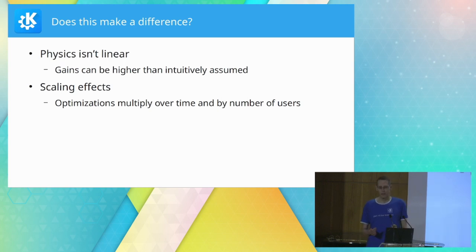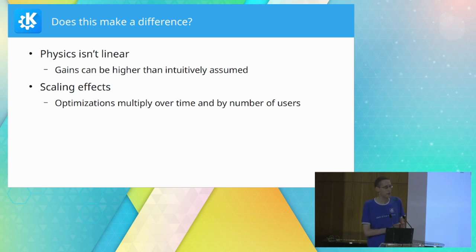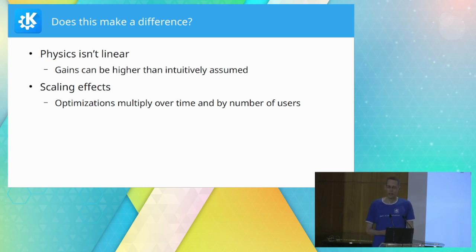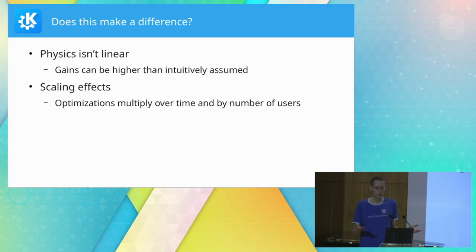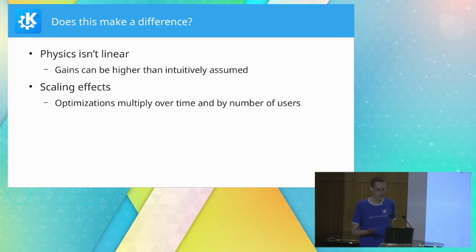There are also scaling effects. This is not a one-time local optimization — it multiplies over time and by number of users. Within our level of distribution and scale, you can reach the energy use of a small city within a year. And if we think about browser engines, that's a completely different level again.